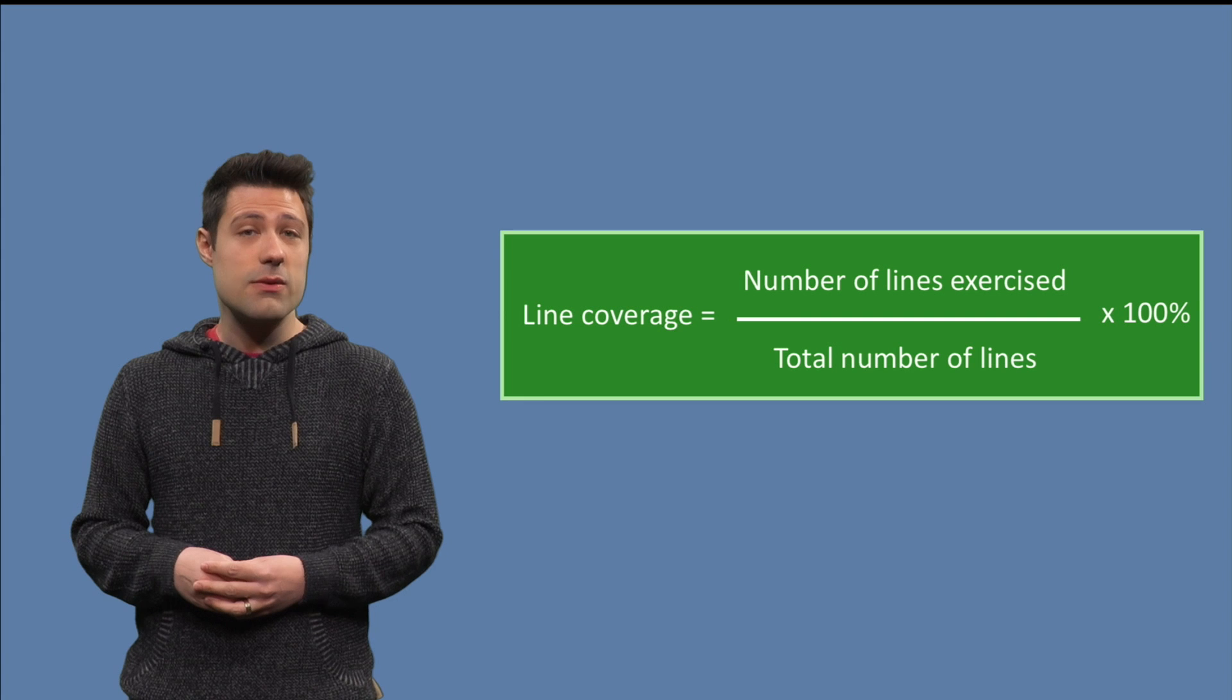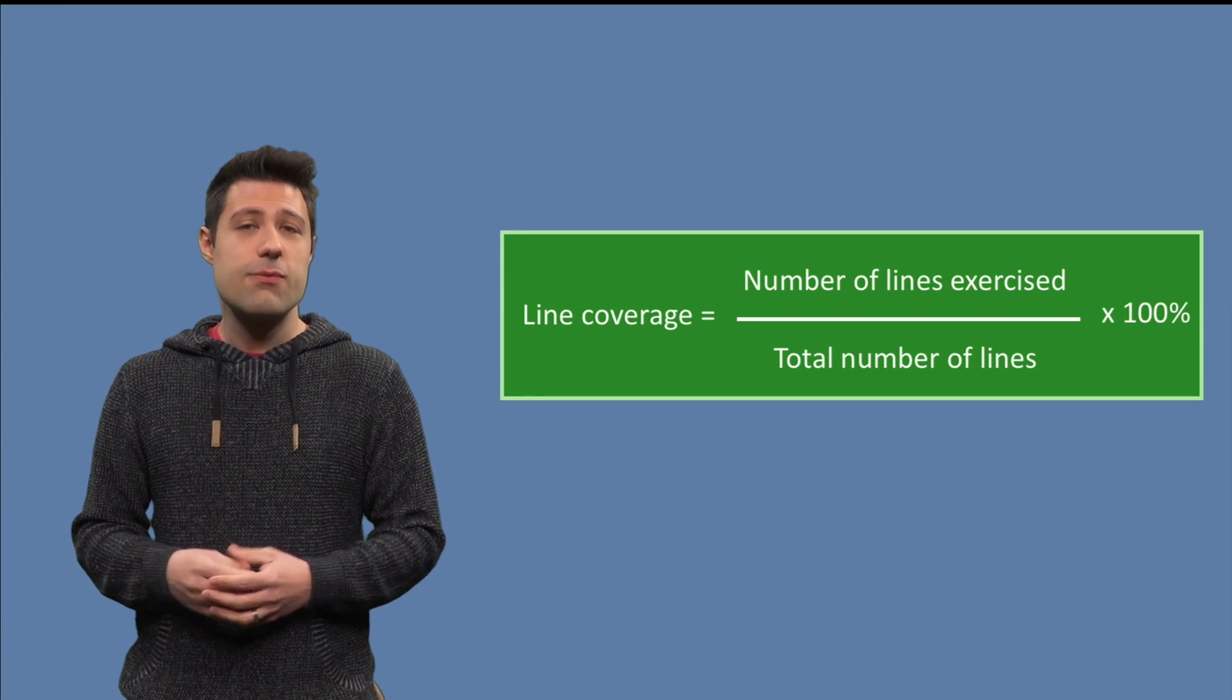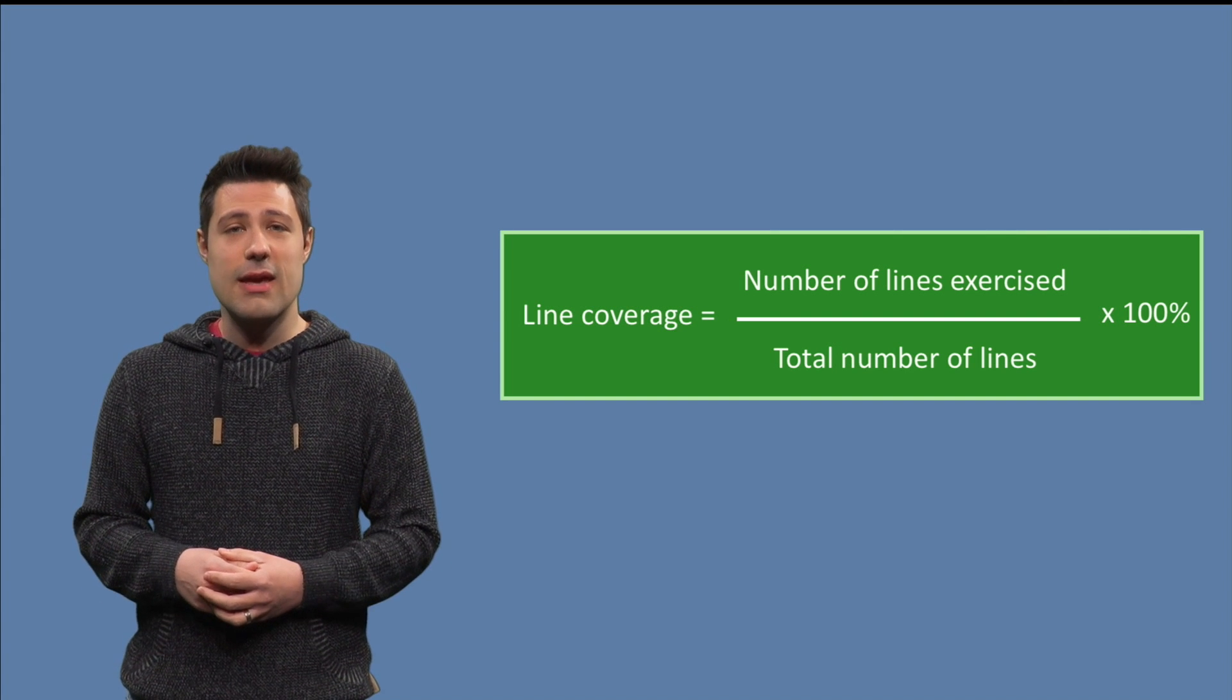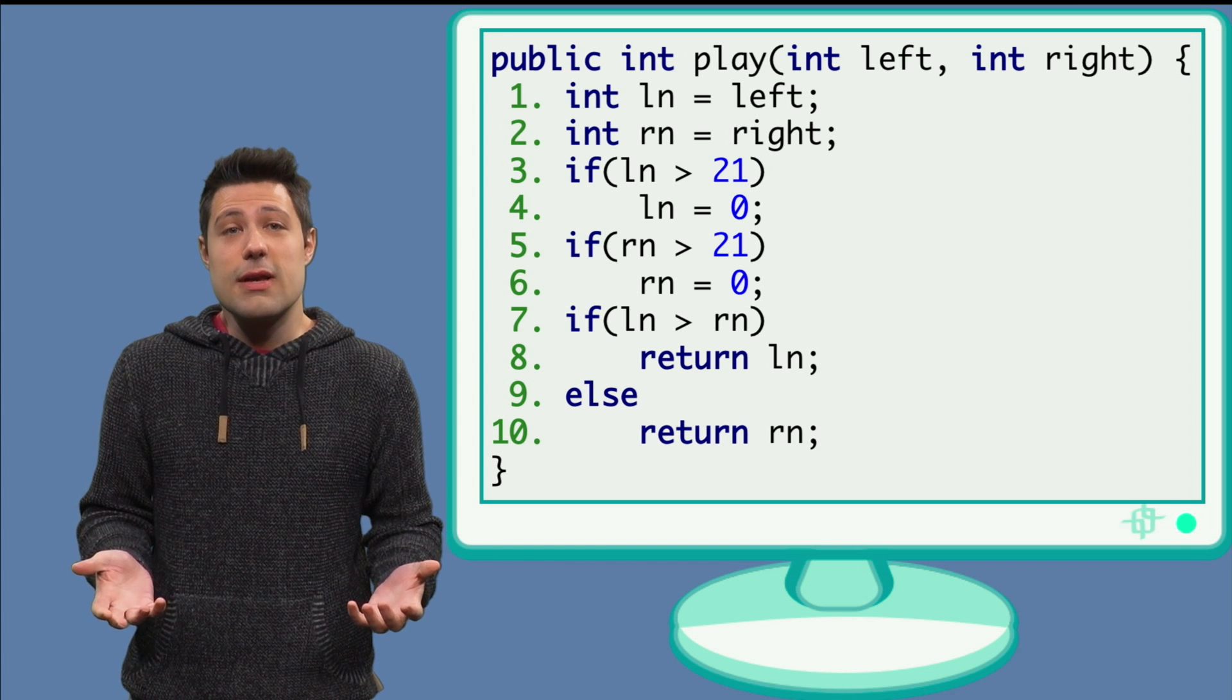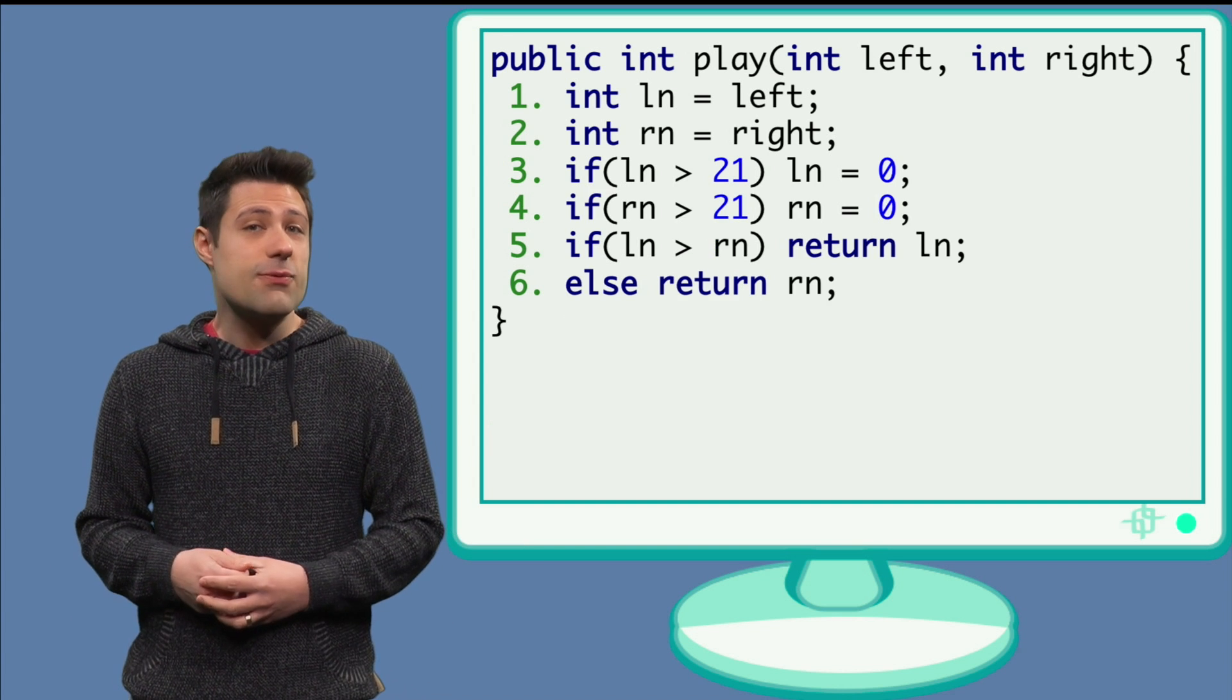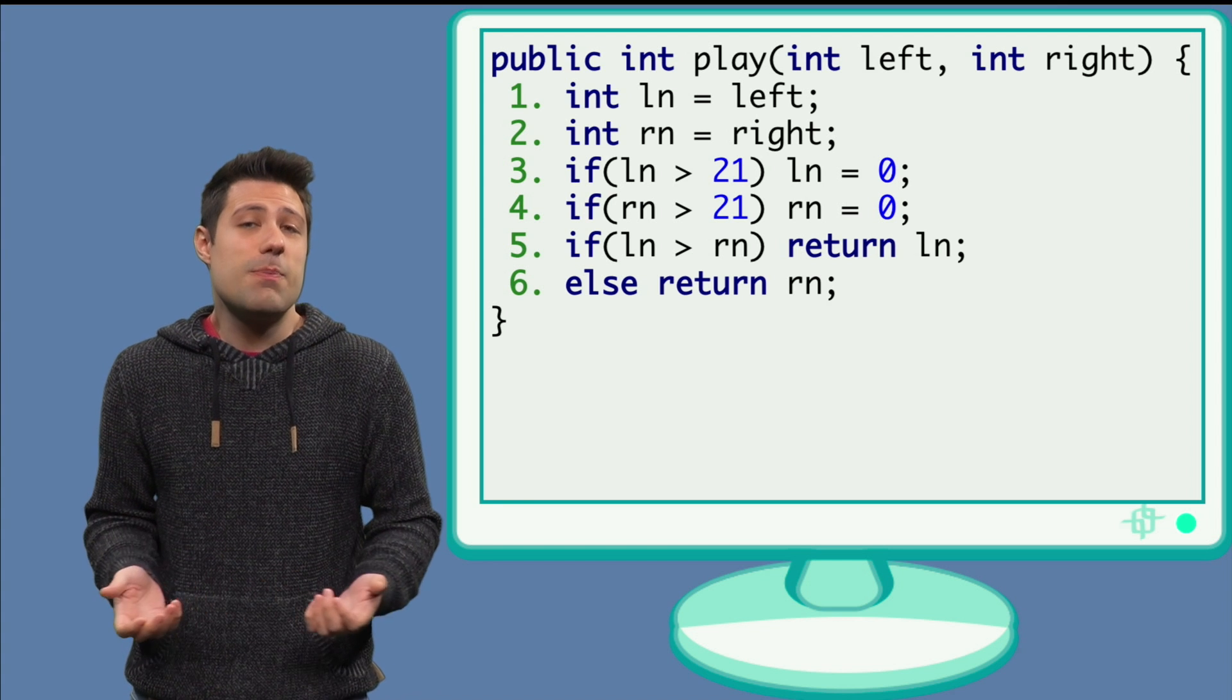First, it can depend on how developers write their code. For example, the same code can have 10 lines or 6 lines if we put the ifs in a single line. It really depends on the developer.